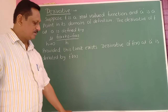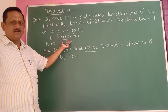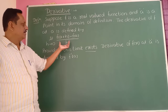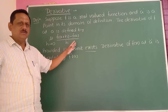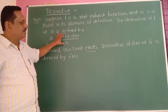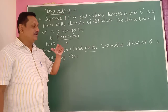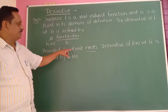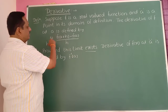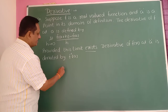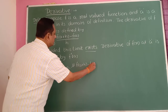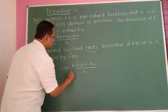Provided this limit exists — meaning it has a definite value. If it is not a definite value, we say the limit does not exist. The derivative of f(x) at a is denoted by f'(a), so f'(a) equals the limit of f(a+h) minus f(a) divided by h as h tends to 0.